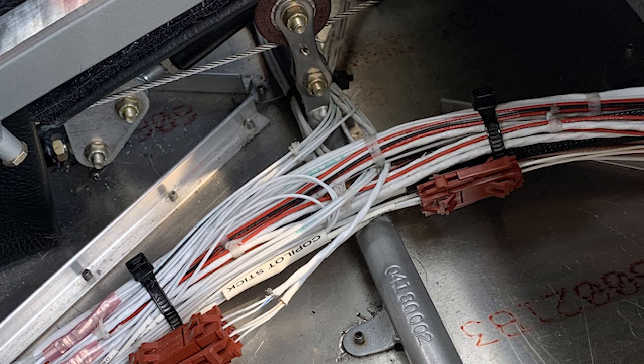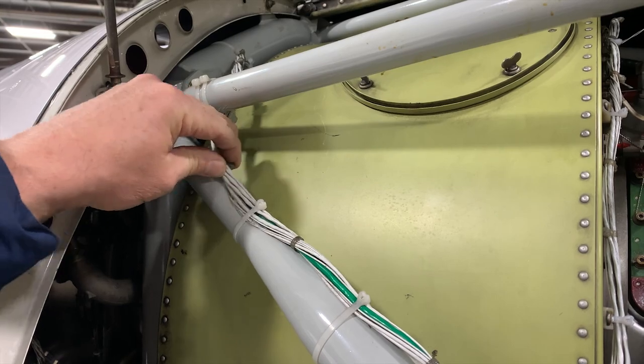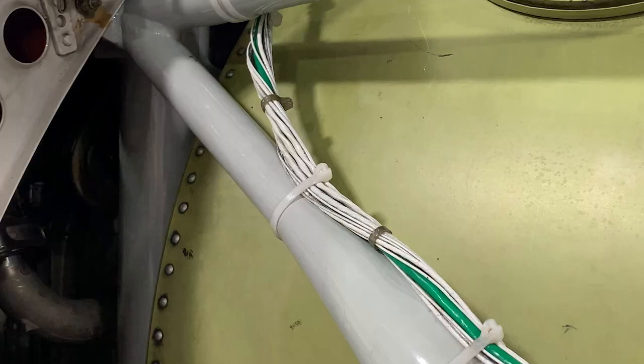When securing a harness in an aircraft, the goal here is to not let any wires contact any metal. All aircraft vibrate excessively, even if you can't feel it. The wire insulation is plastic, and if it's in contact with any metal, guess who's going to win?